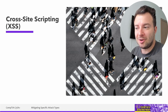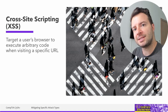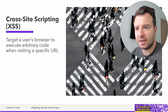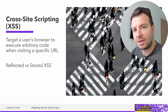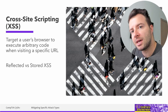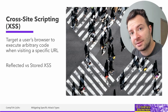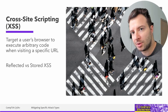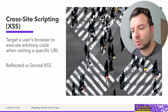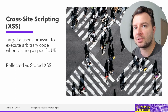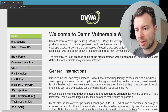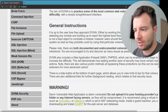Next up is arguably the number one champion of website vulnerabilities: cross-site scripting, or XSS. XSS attacks target a user's browser, tricking it into executing arbitrary code — most likely JavaScript. There are two ways to do this. The first is reflected cross-site scripting, where we trick a user into clicking or accessing a URL that already has the executable script embedded in it. The second is stored cross-site scripting, where the script is stored in the application's database.